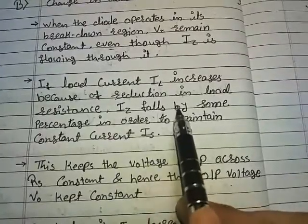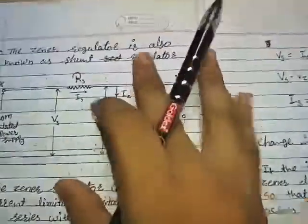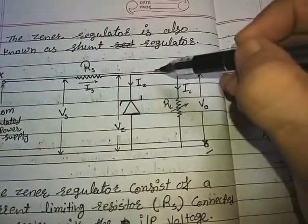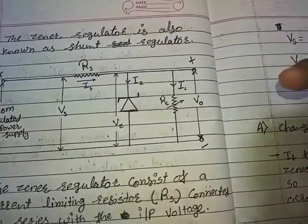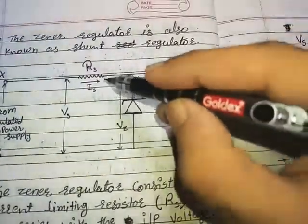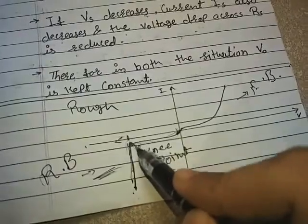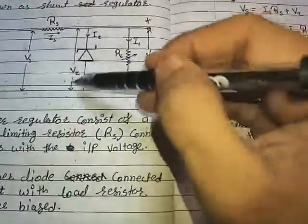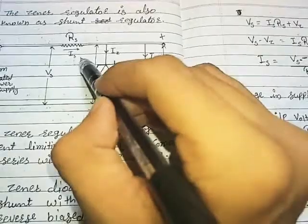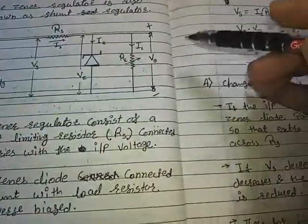If load current IL increases because of a reduction in load resistance, IZ falls by some percentage in order to maintain a constant IS. Since current follows the minimum resistance path, maximum current will flow through the zener diode. This reduces IL, IS remains constant, VS also remains constant, and we get V0 remaining constant.